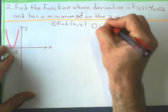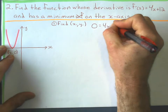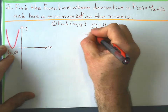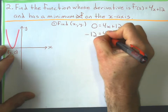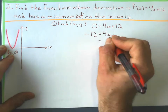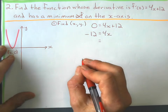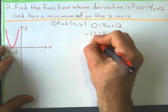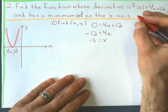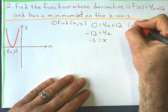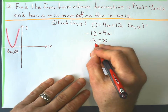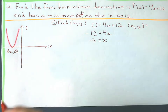The gradient at a minimum is also 0, so I set my gradient function equal to 0 and solve for x. 0 equals 4x plus 12. Subtract 12 to the other side, then divide by 4: negative 12 divided by 4 gives me negative 3. So x1, y1 equals (negative 3, 0).